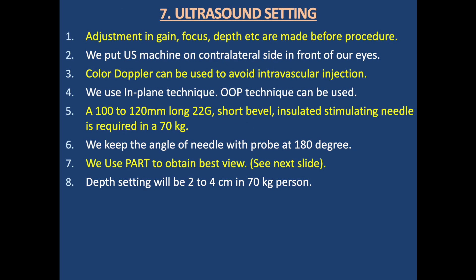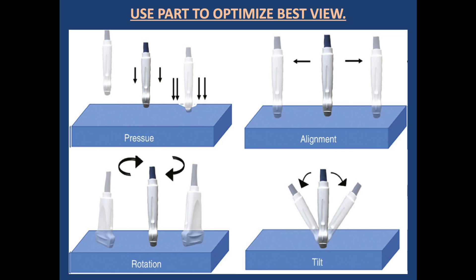Ultrasound settings: Adjustments in gain, focus, and depth are made before the execution of the procedure. The ultrasound machine is placed on a console in front of the operator's eyes. Color Doppler can be used to avoid intravascular injection. We use in-plane technique; out-of-plane may be used. A 120 mm, 21 or 22-gauge short-bevel insulated stimulator needle is required. Depth setting will be 2–4 cm. We use PART maneuver — Pressure, Alignment, Rotation, and Tilt — to obtain the best view.